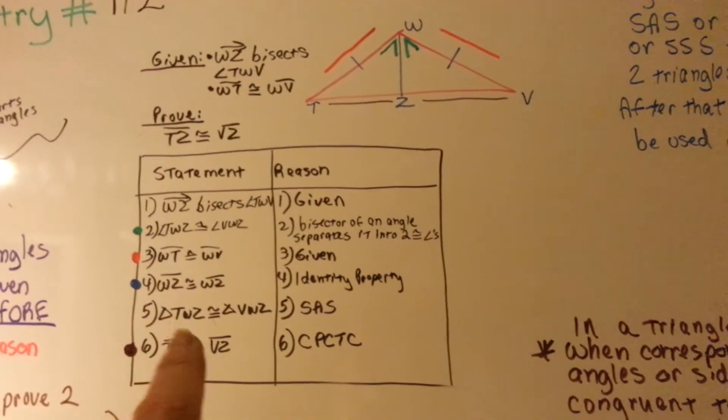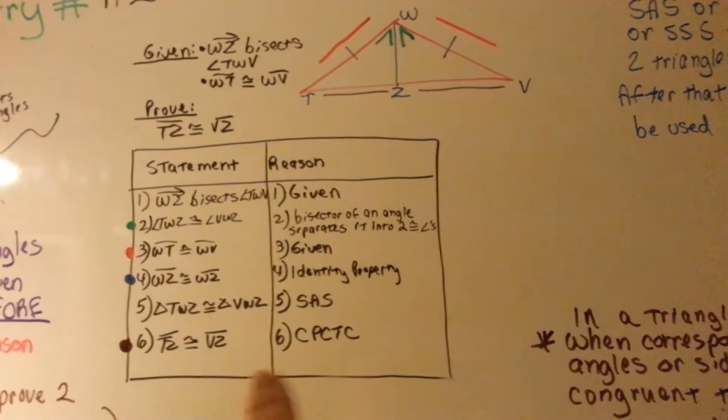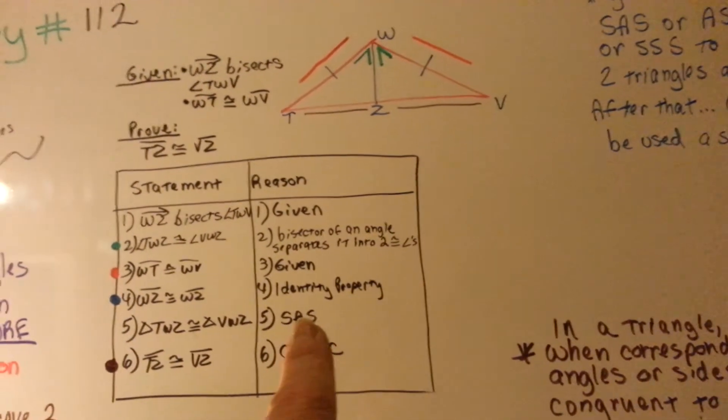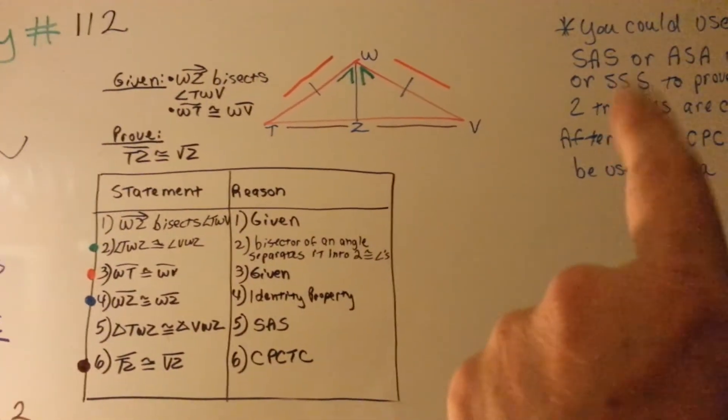So triangle TWZ, this guy on the left, is congruent to triangle VWZ, the guy on the right, because of side, angle, side. Remember I told you, you need to know those.